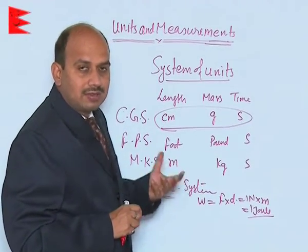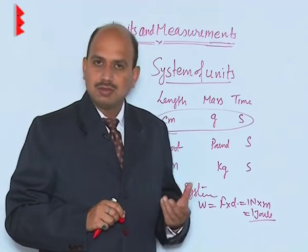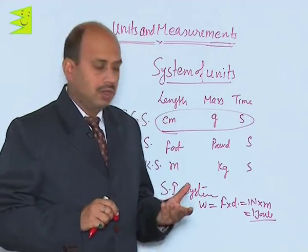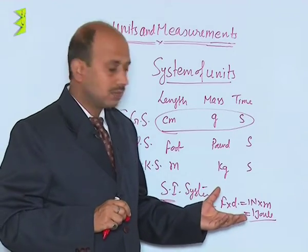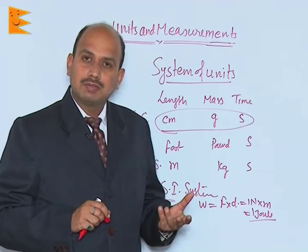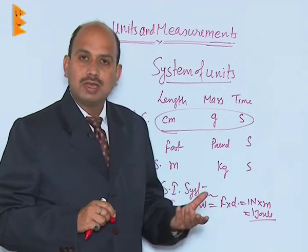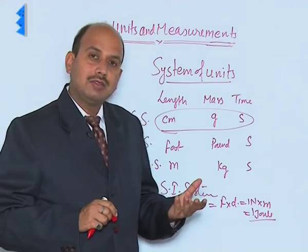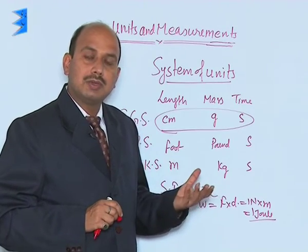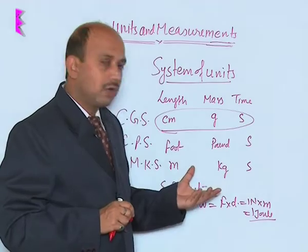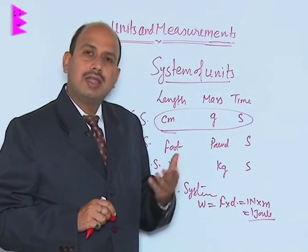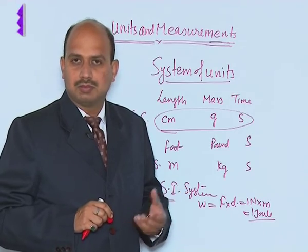By using this SI system there are many advantages. This SI system is a coherent system — it is a rational one — meaning any one quantity can be given a particular name which is fixed in all cases. Another advantage is that it is a metric system where numbers can be measured in the power of, or in the multiples of, 10. So that is a metric system, and those are the advantages of SI system.